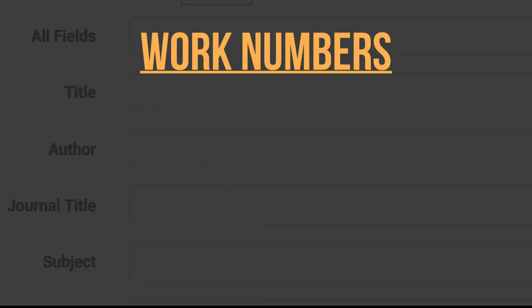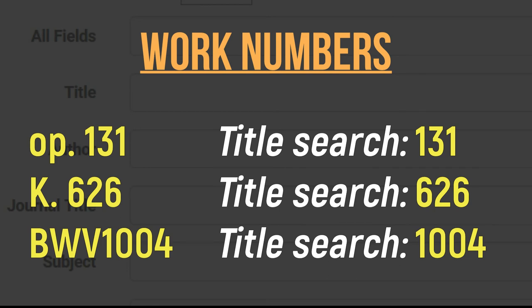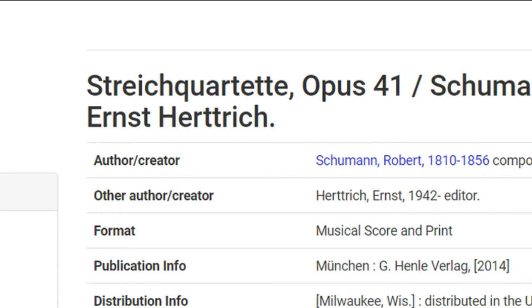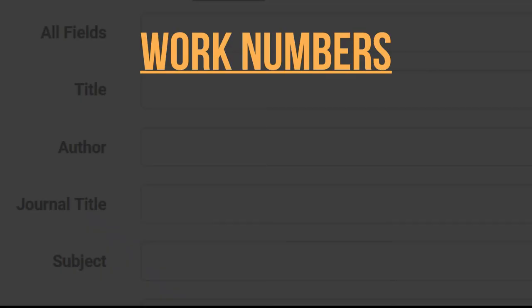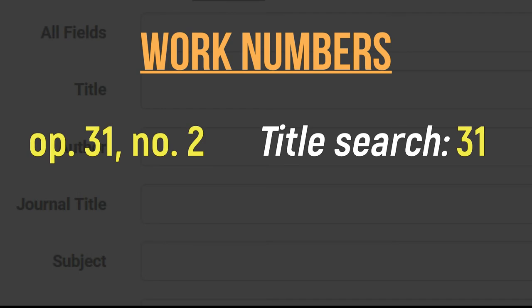When looking for a piece of music with an opus number or thematic catalog number, reduce your search term to the number only. Do not type 'OP.' Instead, just put the opus number, K number, or BWV number in by itself. Because that won't always appear on the title of a score — the title might have 'opus' spelled out, or 'OP' without a period. When you have an opus and a number, like opus 31 number 2, just put the opus number in with no 'OP.' You can sort through your results manually to look for number 2.